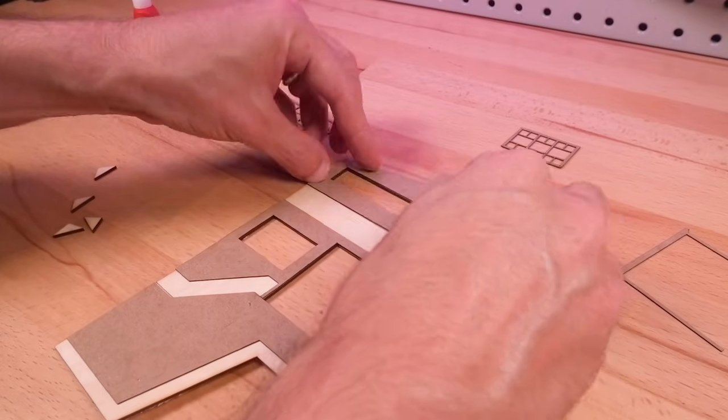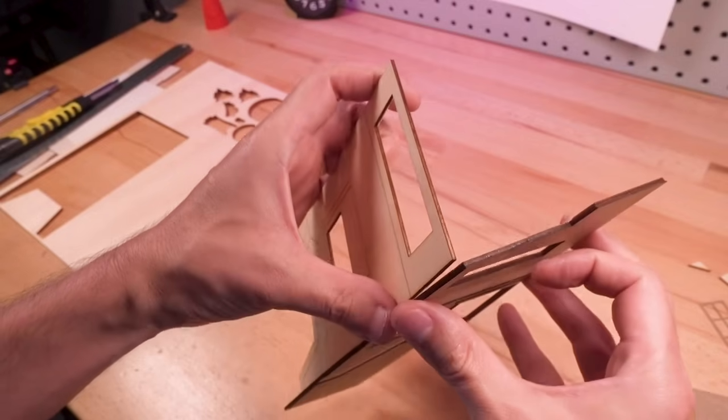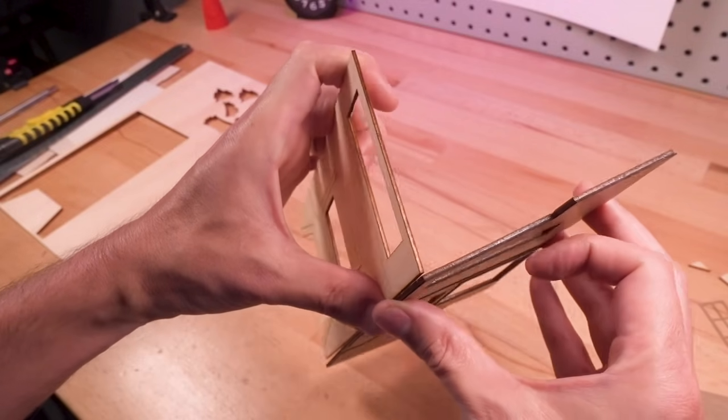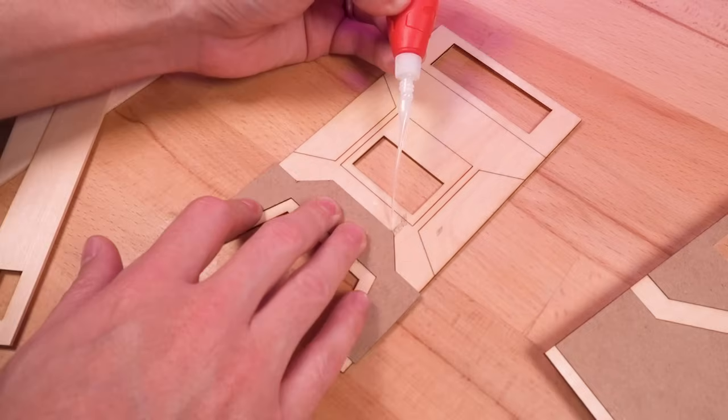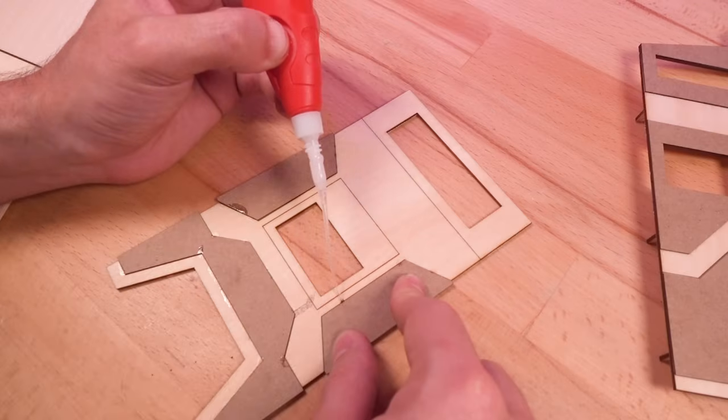One thing I didn't account for here, however, was the thickness of the walls. So, to compensate for this, I made sure that the panels on the front and back walls had a bit of overhang to them, which you can see here.